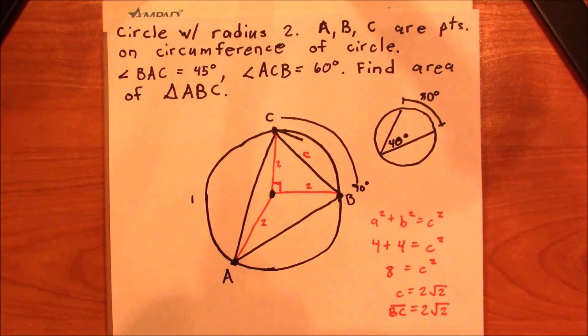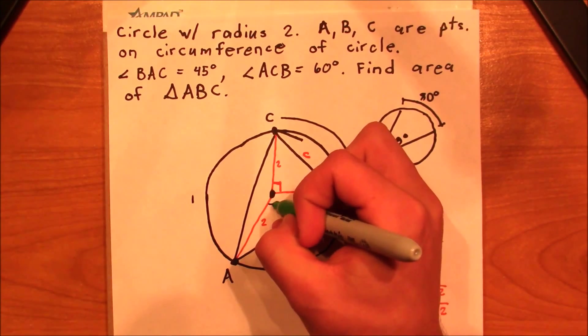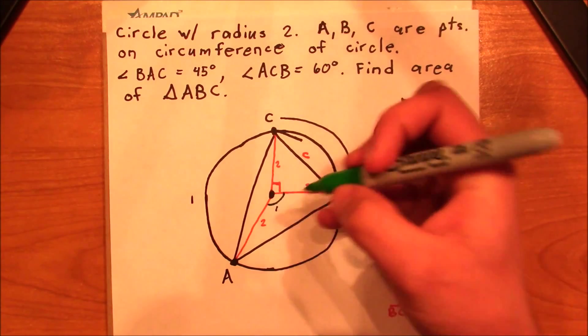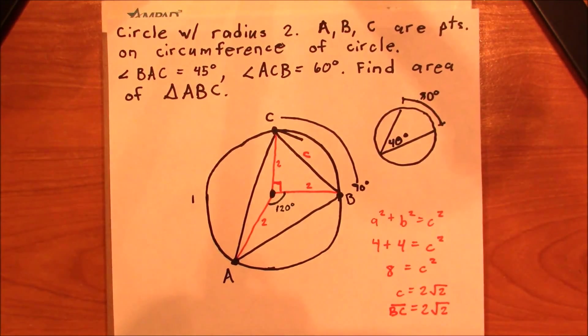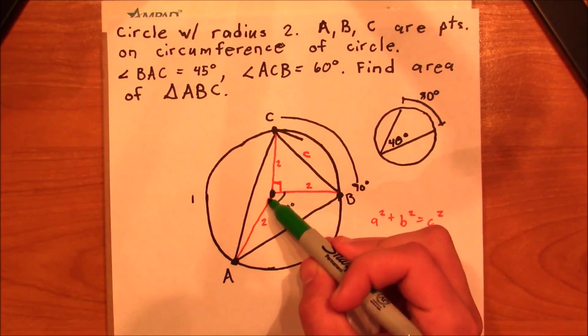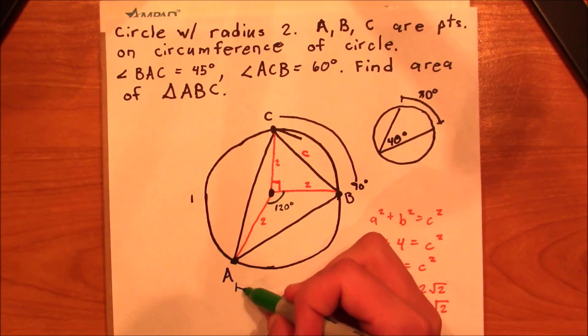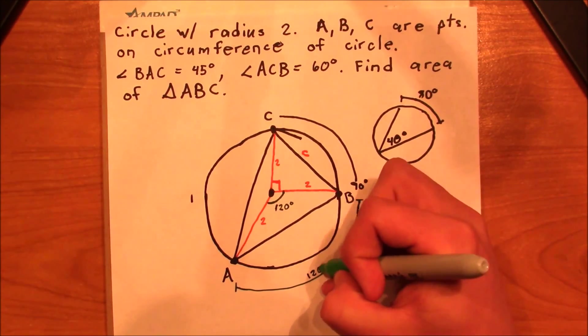So what we can do is we can figure out that this angle right here is going to be 60 degrees, or actually it's going to be 120 degrees. We know it's going to be 120 because this is a central angle, and it's got to be the same arc length as this, which is 120 degrees.